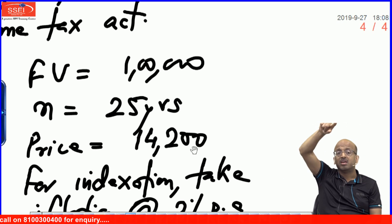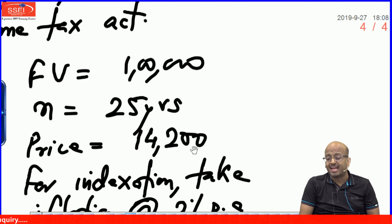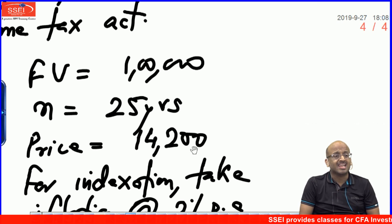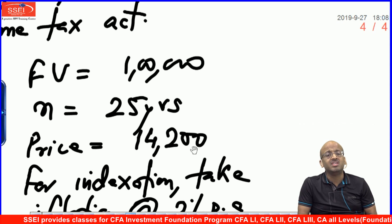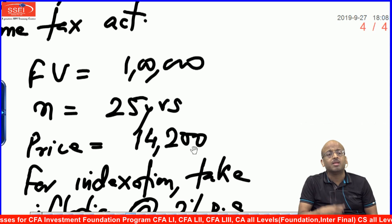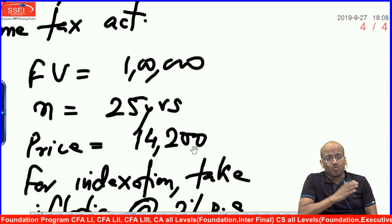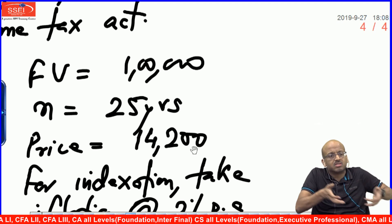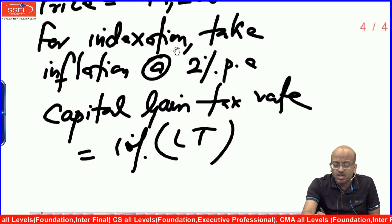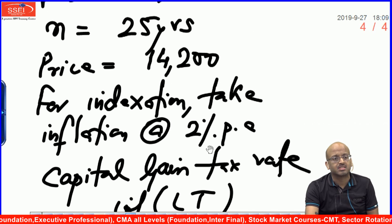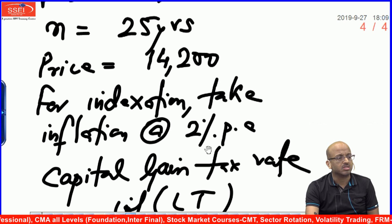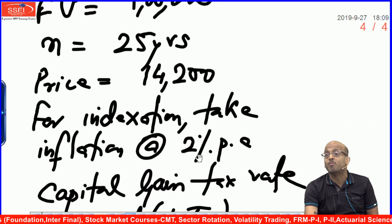One thing is clear: what are we going to get after 25 years? We are going to get 1,00,000 minus capital gain tax. You need to find out the capital gain tax, that is 10% of capital gain. The formula for long term capital gain: net sale proceeds minus indexed cost of acquisition. Sale proceeds is 1 lakh, so you need to find the indexed cost of acquisition. Indexed cost of acquisition = cost of acquisition × (index in period of transfer / index in period of acquisition). Based on inflation, 14,200 needs to be compounded at 2% for 25 years — that will be the indexed cost of acquisition.